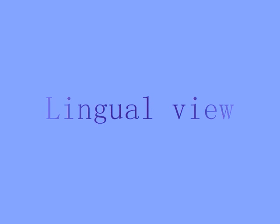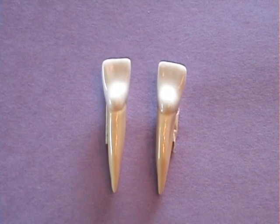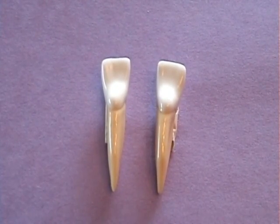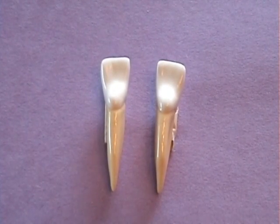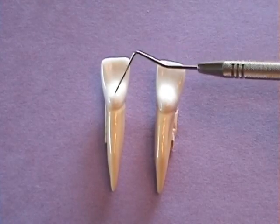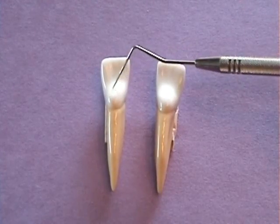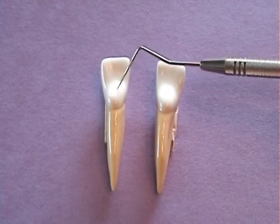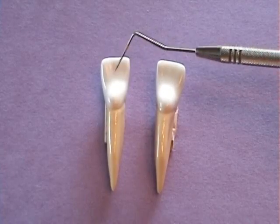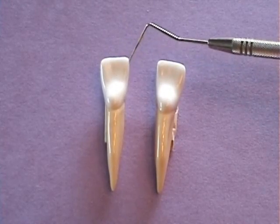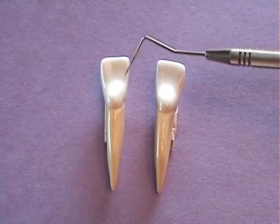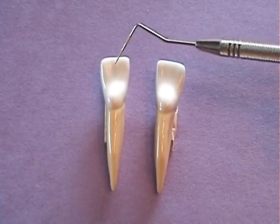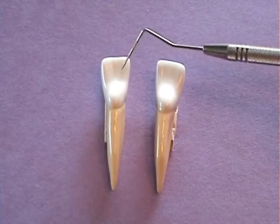From the lingual, the anatomy tends to be fairly simple. There is a small cingulum. There are also mesial and distal marginal ridges, but they tend to be a little bit subtle. There also is a lingual fossa, and it also is subtle.